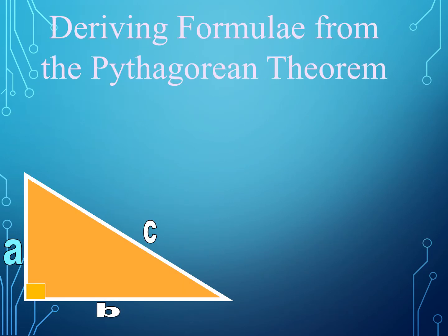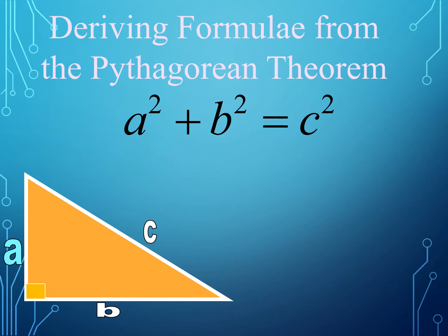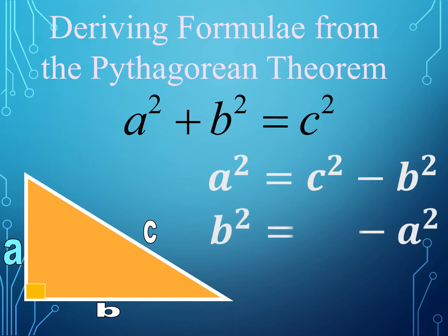Let us derive some formulae — the plural form of formula — from the Pythagorean Theorem. The Pythagorean Theorem is A squared plus B squared is equal to C squared. If one of the legs is missing, we have A squared is equal to C squared minus B squared, and B squared is equal to C squared minus A squared. If one of the legs is missing, you subtract. But if the hypotenuse is missing, you add.